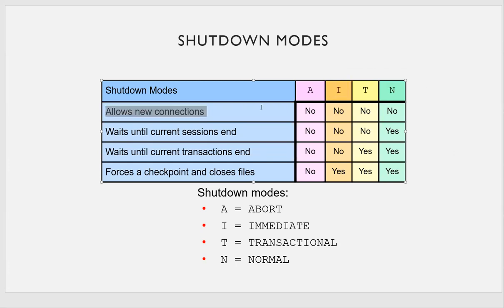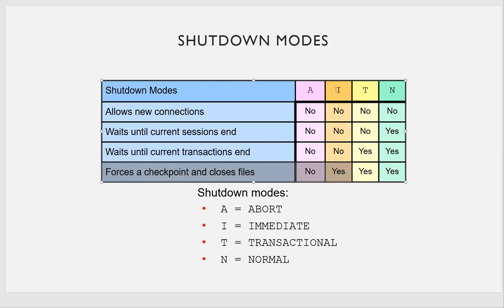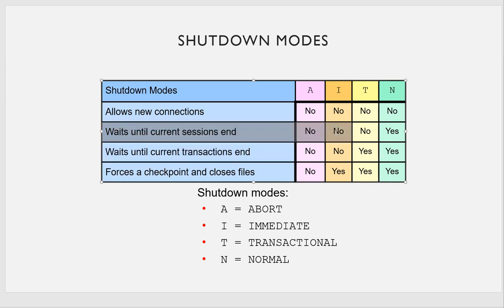Shutdown immediate does not allow any new connections, forcefully ends all user sessions, immediately cancels all running transactions without waiting for them to complete, and forces a checkpoint. The best and recommended option is always shutdown immediate — it forces the checkpoint, cancels transactions, disconnects all user sessions forcefully, and does not allow any new connections.